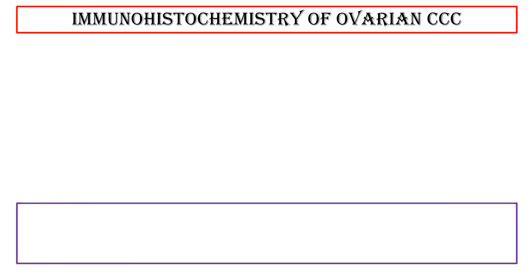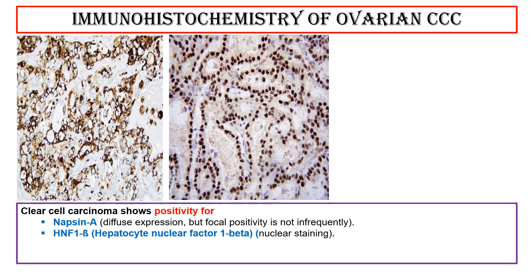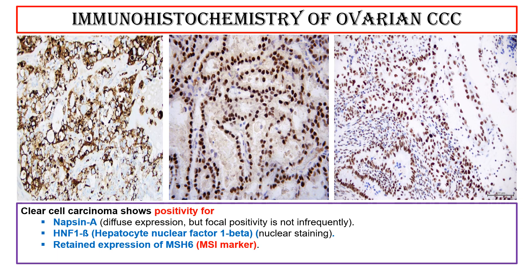Immunohistochemistry: clear cell carcinoma shows positivity for napsin A — diffuse expression, though focal positivity is not infrequent — and HNF1-beta (hepatocyte nuclear factor 1-beta), which shows nuclear staining. Retained expression of MSH6, a microsatellite instability marker. It shows negativity for ER, PR, and WT1.